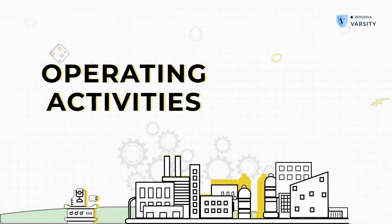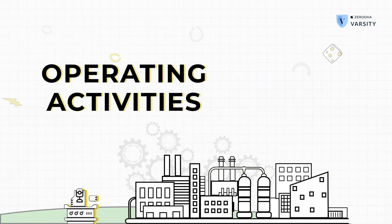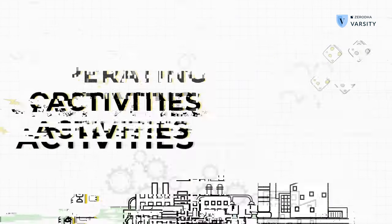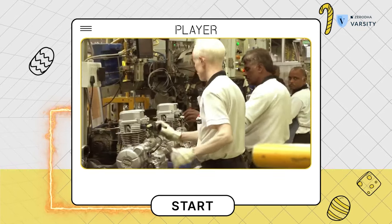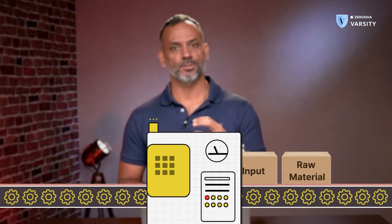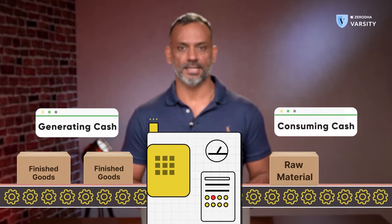Each of these activities either generates cash or consumes cash. The sum total of the cash position of each of these activities forms the cash flow statement of a company. The operating activity of a company represents the core operations of a company. For example, in the case of Bajaj Auto, the core operation is to manufacture and sell bikes. Any healthy business should ideally be generating cash out of its operations.